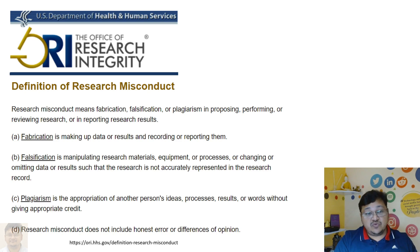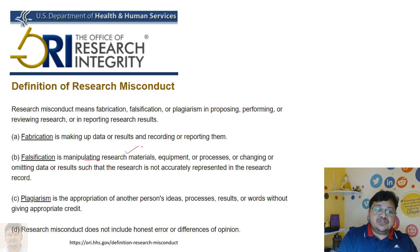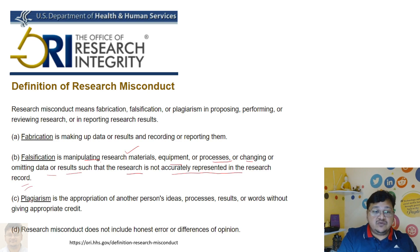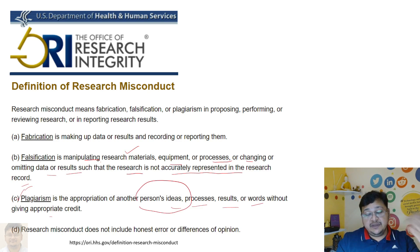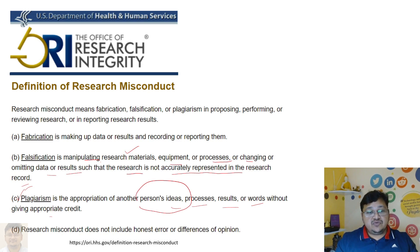As per the Office of Research Integrity (ORI), US Department of Health and Human Services: fabrication is making up data or results and recording or reporting them. Falsification is manipulating research material, equipment, or processes, or changing or omitting data or results such that the research is not accurately represented in the research record. Plagiarism is taking another person's ideas, processes, or results and assuming them as your own. Research misconduct does not include honest error or differences of opinion. Plagiarism will be discussed in detail in the next video.